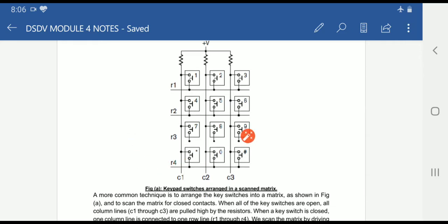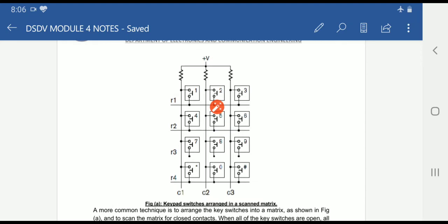For example, if switch 5 is pressed, when switch 5 is pressed we can say that column 2 will be driven low by these input registers. With respect to that, row 2 is again driven low by the additional circuit we call output registers. Like this, it will identify which key is pressed in the keypad switch using a scanned matrix.